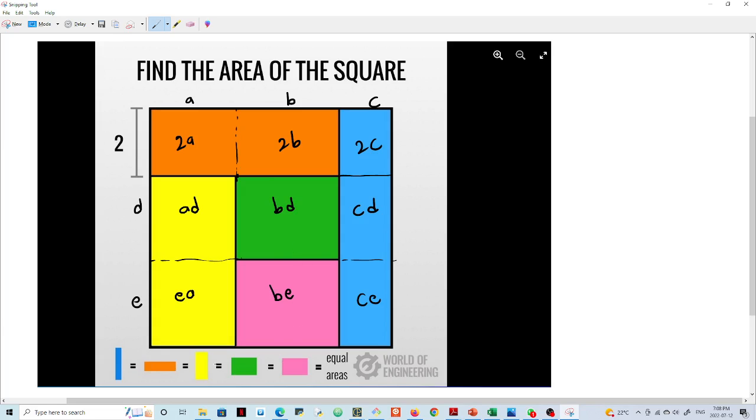all the different colors here, they are equal in areas. Now when you look here, you can see that bd is equals to be, right from the bottom here. So if bd equals be, it means that d is equals to e.